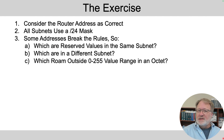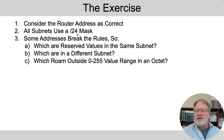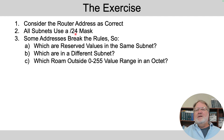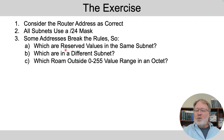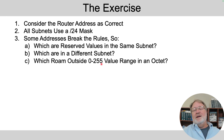In these exercises, I'll show you a diagram with some IP addresses and consider the router address as correct. That is, if there's a conflict between a router and a PC's address, the router one is correct and the PC is wrong. All subnets use a slash 24 mask — that's the simplest case, giving a very predictable, easy pattern. Find the rule breakers: which are using reserved values in a subnet, which are using values in a different subnet, and which roam outside the legal values in any octet.